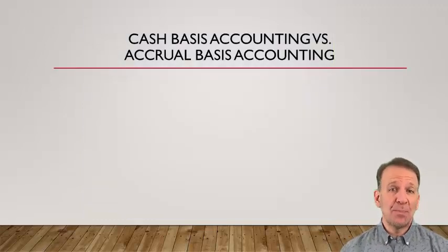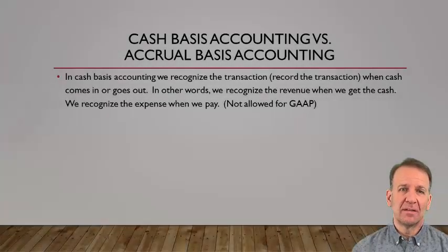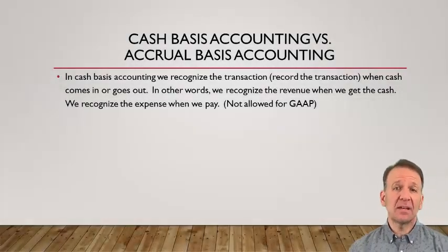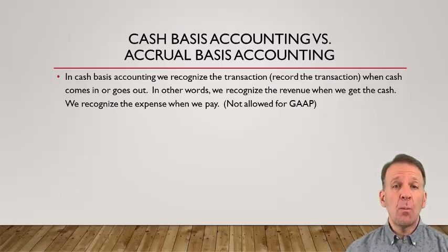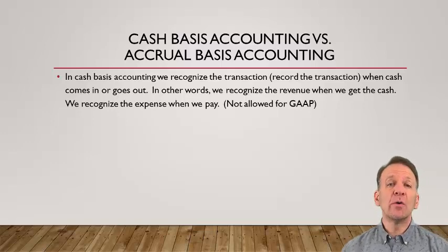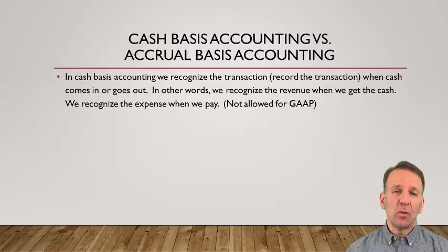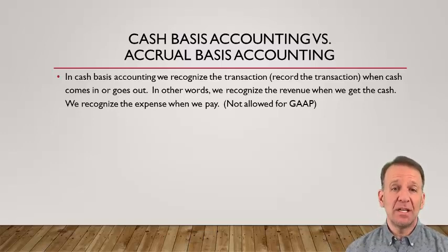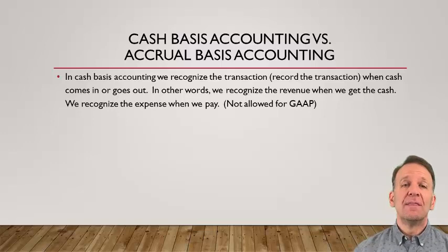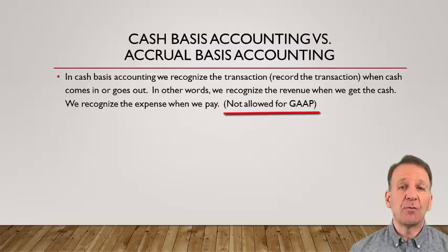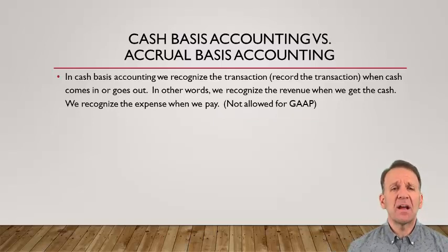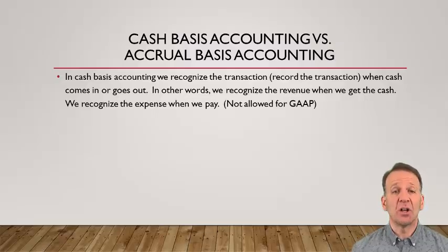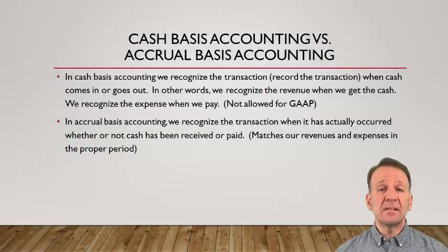we're going over cash basis accounting versus accrual basis accounting. In cash basis accounting, we recognize transactions generally when we either pay the cash or receive the cash — in other words, when cash comes in or goes out. This method is not allowed for GAAP purposes. You will recall that GAAP stands for Generally Accepted Accounting Principles. They are the accounting rules that accountants follow.